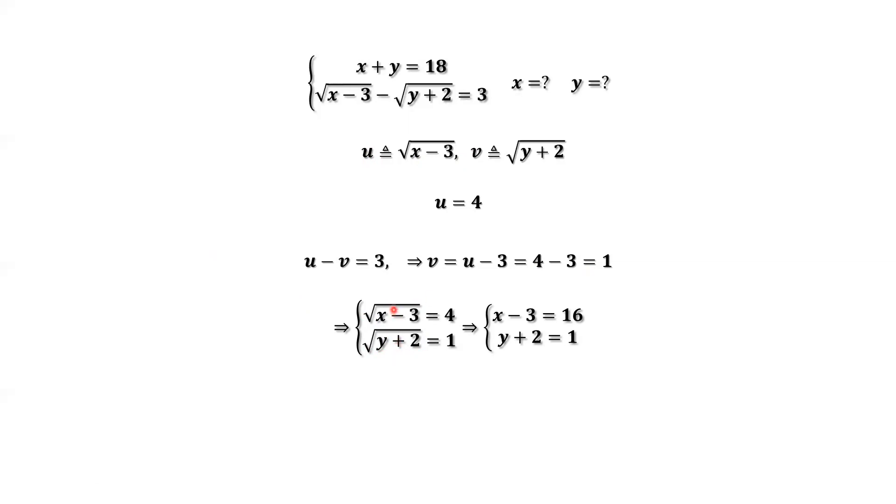We square both sides of the first equation. We have x minus 3 equals 16. Similarly, we can get rid of the root sign from the second equation by squaring both sides. This implies y plus 2 equals 1.